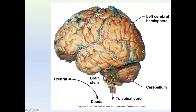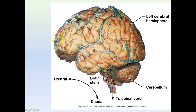The direction rostral means towards the snout or towards the nose, and caudal means towards the tail. These terms are sort of for animals, but we use them for the human brain. Anything more forward — what we call anterior — is also known as rostral, and inferior is also known as caudal.